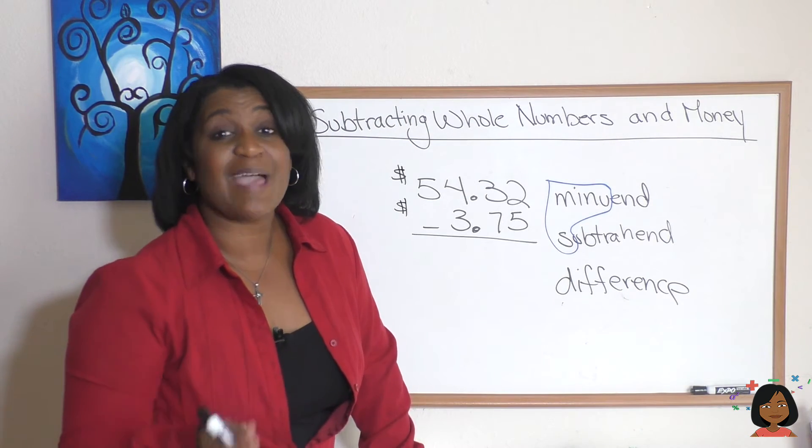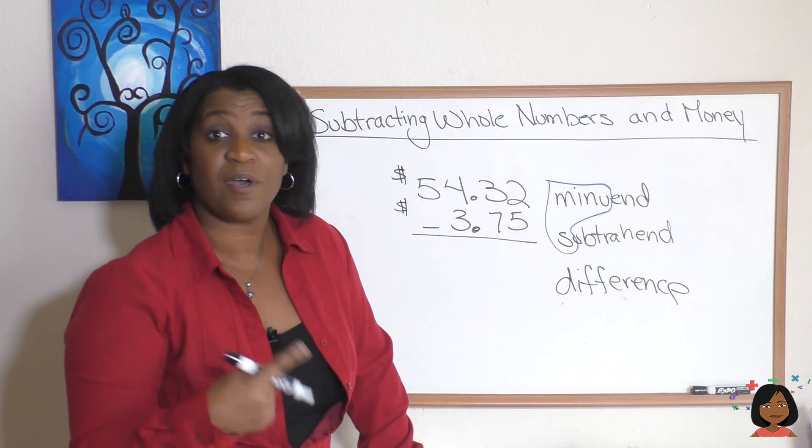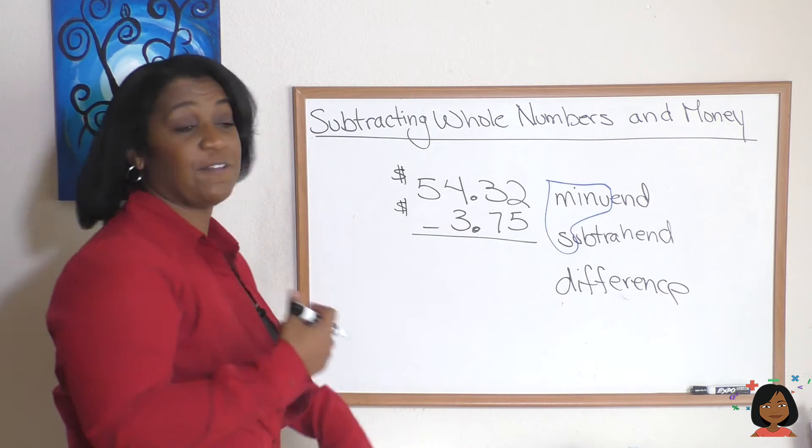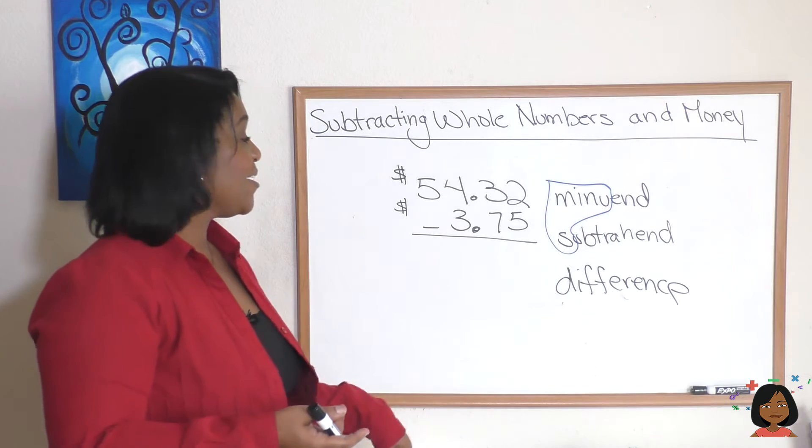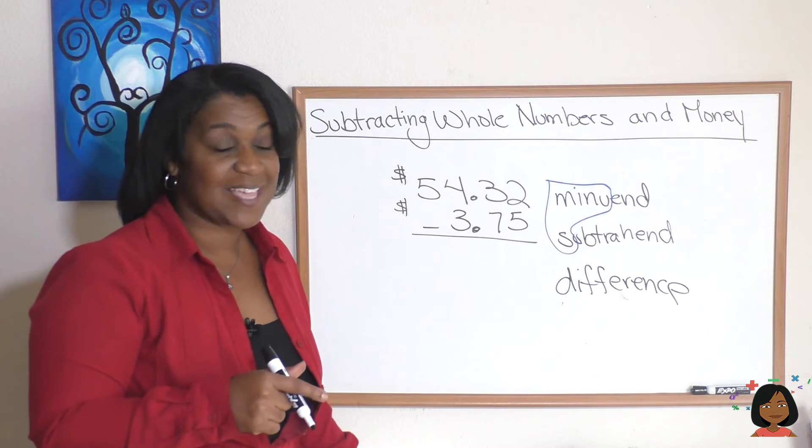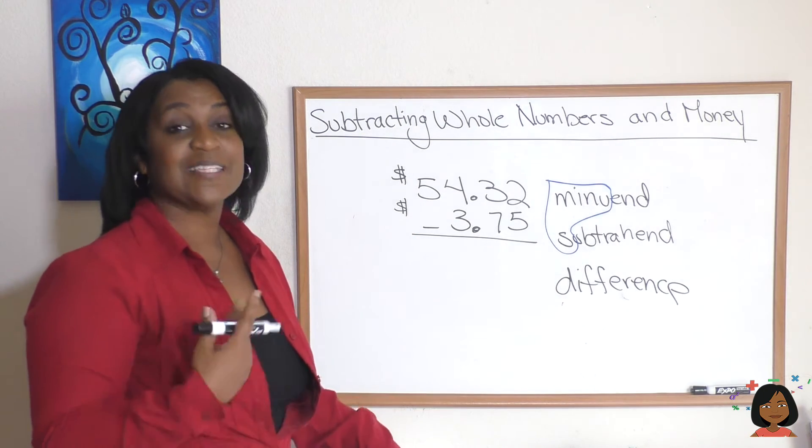Let's keep it going and this time do a subtraction problem with money. We have $54.32, that's our minuend, and we've got $3.75, that's our subtrahend. Let's go ahead and subtract.